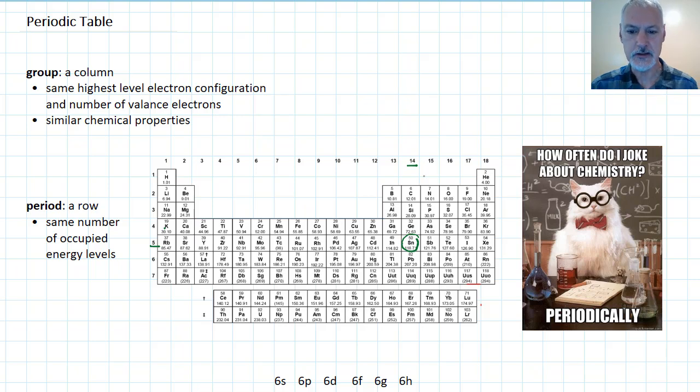Now let's start by looking at the features that are common amongst things that are in the same column. They refer to these as chemical families. To do that, I'm going to take a look at the element oxygen. Oxygen has a configuration of 1s2, 2s2, 2p4.